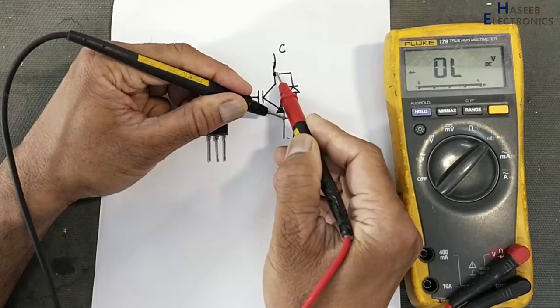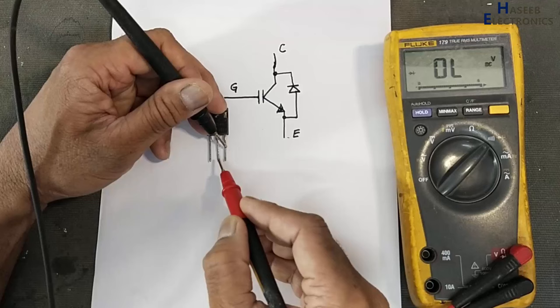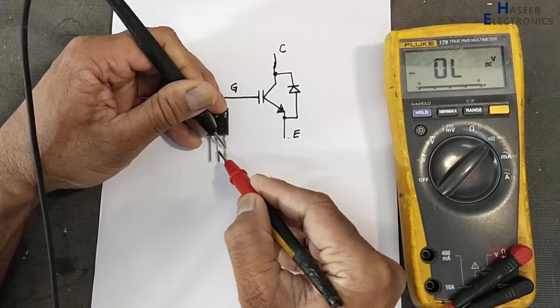Black lead at emitter, red lead at collector. So this diode must be open circuit if the channel is off. If channel is short circuit, then we will receive this path. Black lead at emitter, red lead at collector—it is open circuit.